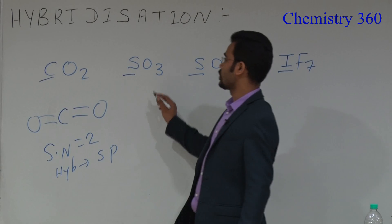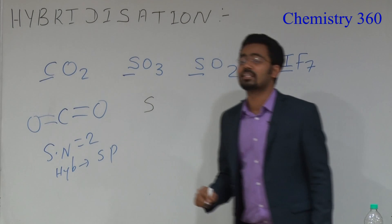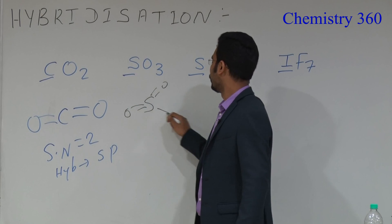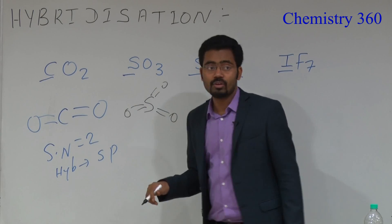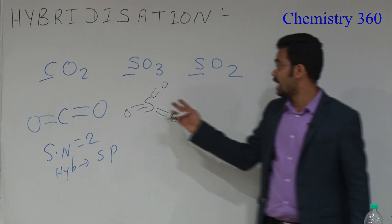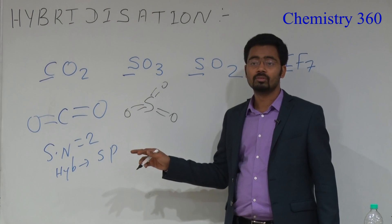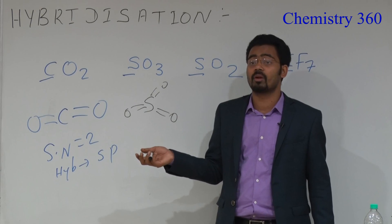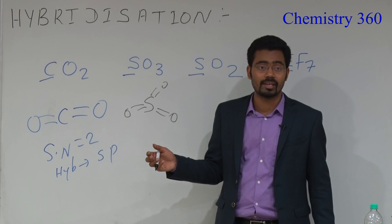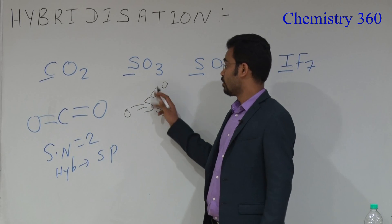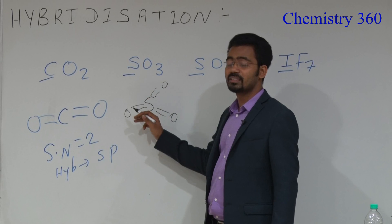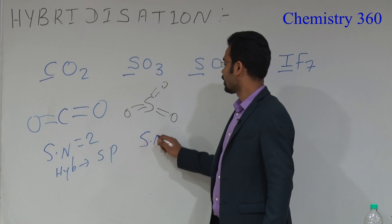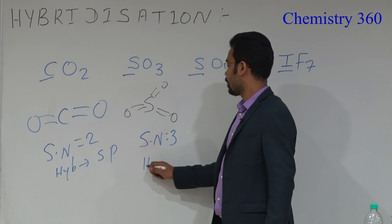Now SO3 — what is the structure of SO3? Oxygen can form a maximum of 2 bonds, and sulfur has 6 valence electrons. There are 6 bonds total, so there is no lone pair on the central atom. There are 3 super sigma bonds, so the steric number is 3 and the hybridization is sp2.